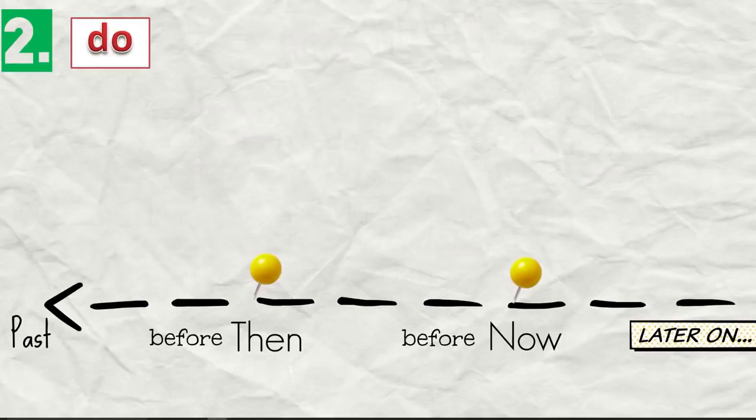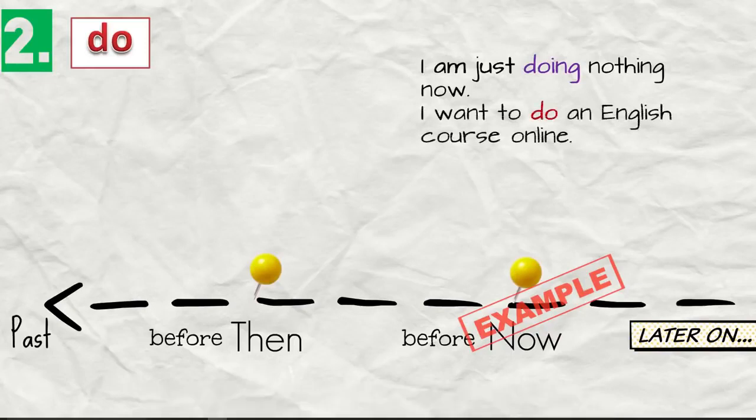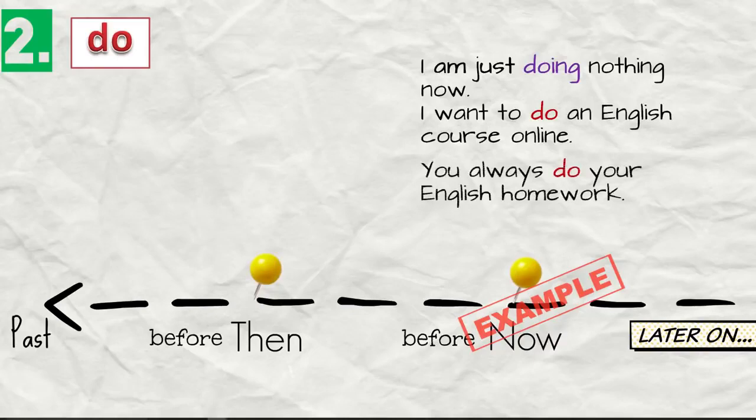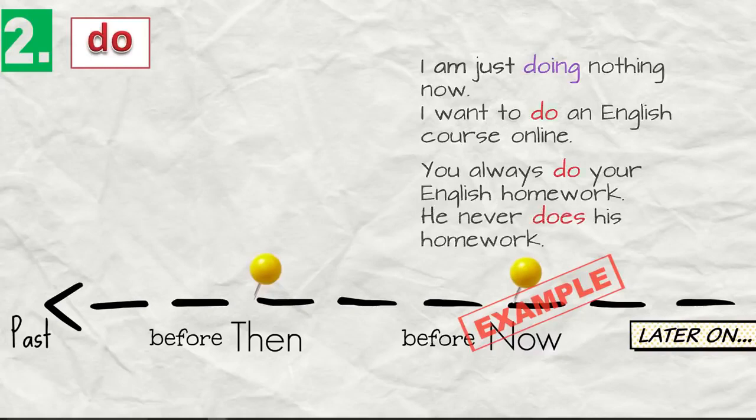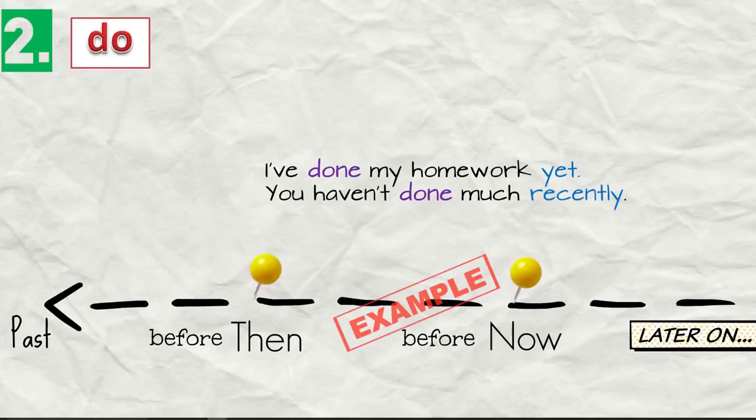Alright. And again, let's have examples. I'm just doing nothing now. Which is not true, but it's just an example. I want to do an English course online. You always do your English homework. He never does his homework. So this is the present, now. Now we have examples. I've done my homework yet. You haven't done much recently. I've been doing nothing with my English for years.